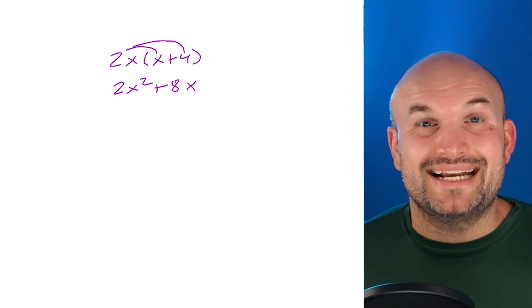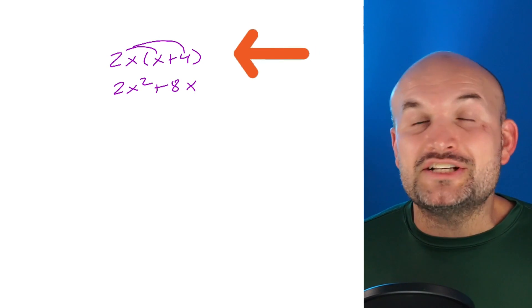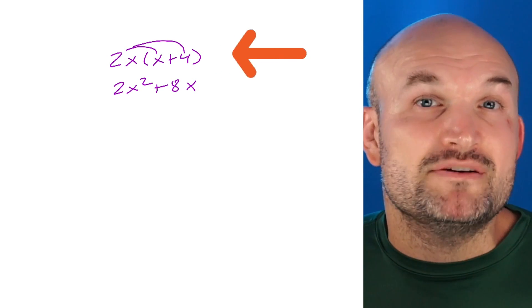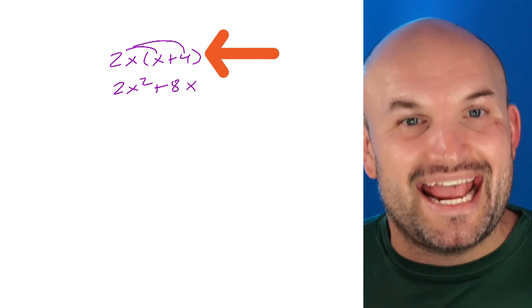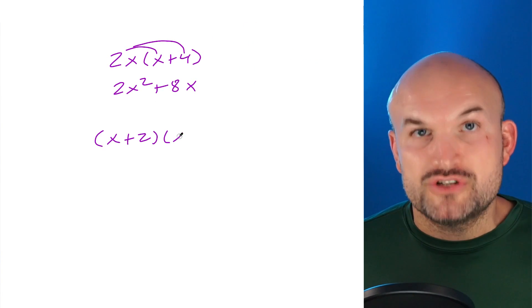Students usually get stuck with trinomials because if trinomials have nothing in common you can't factor anything out. So how does a trinomial get factored down into a product of two binomials? It all comes down to understanding the distributive property. In the last example I had 2x times (x + 4), and via the distributive property we multiply 2x times both the x and the 4 to get back to the original solution.